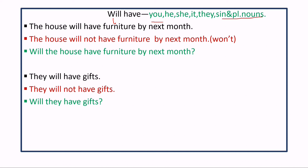First example: 'The house will have furniture by next month.' Here, the subject 'the house' is a singular noun. Negative sentence: 'The house will not have furniture by next month.' Interrogative sentence: 'Will the house have furniture by next month?' Here, will is used as a helping verb placed before the subject.